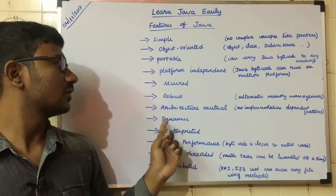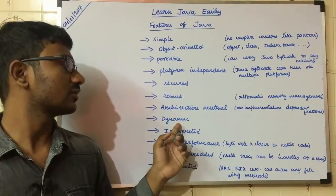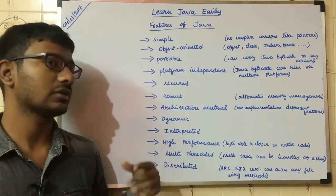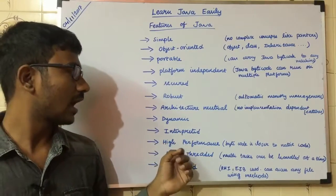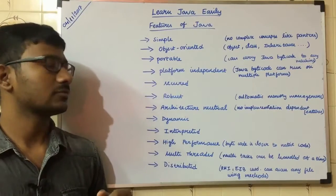Next is dynamic. Java is dynamic — details will be in the next video. Next is high performance.